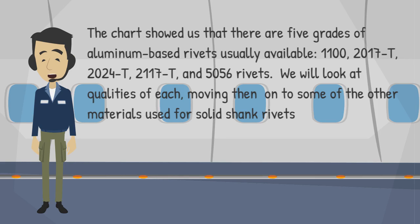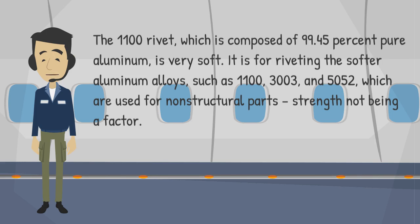We will look at the qualities of each, moving then onto some of the other materials used for solid shank rivets. The 1100 rivet, which is composed of 99.45% pure aluminum, is very soft. It is for riveting the softer aluminum alloys such as 1100, 3003, and 5052, which are used for non-structural parts where strength is not a factor.